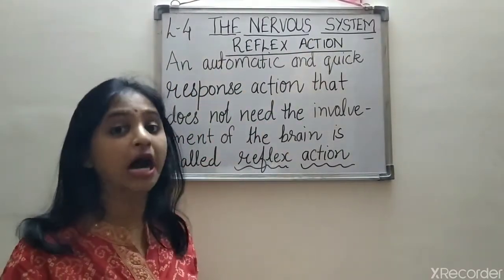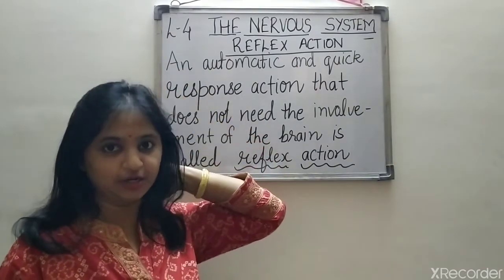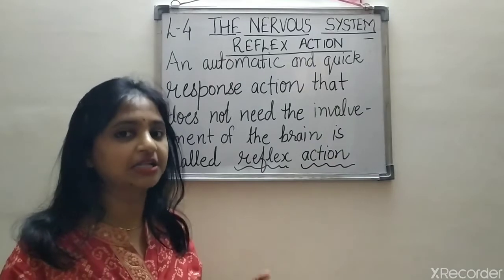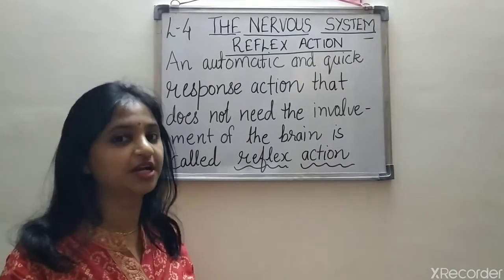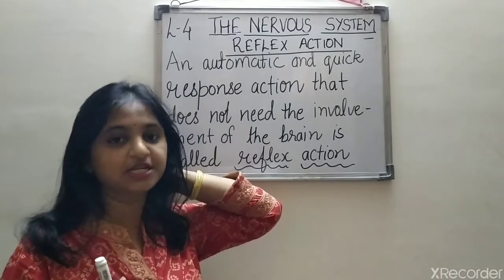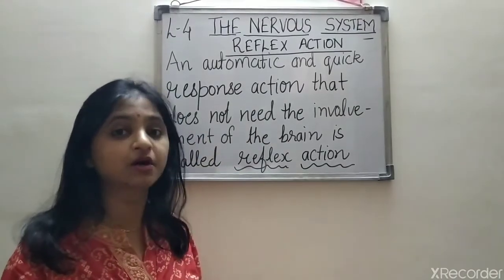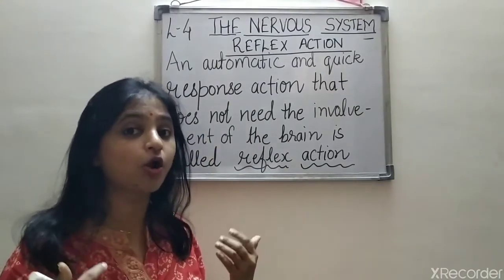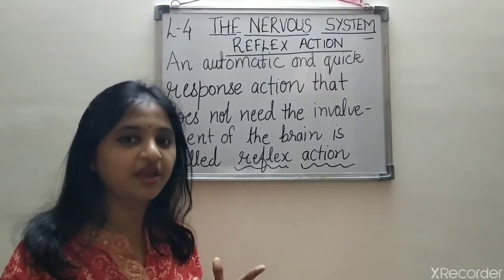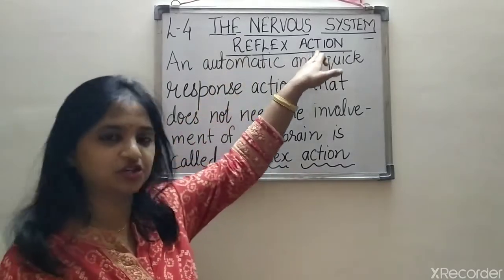Our nervous system is made up of the brain, spinal cord, and nerves. The brain is divided into 3 parts. The spinal cord is present in our neck, and there are so many nerves present all over our body. Today we are going to study about reflex action.